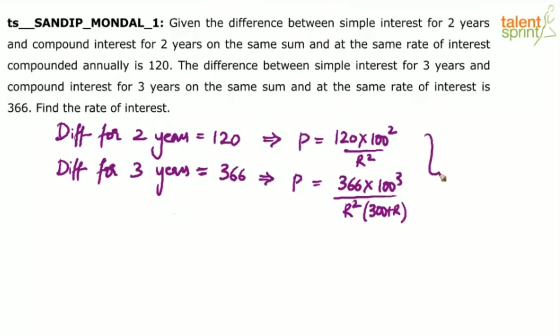That's it. 2 equations and 2 unknowns. What are the 2 unknowns? P and R. Can you solve? Yes. Of course, what you can do here is since he is asking us to find out the rate of interest, equate these 2. Since both are P and P,